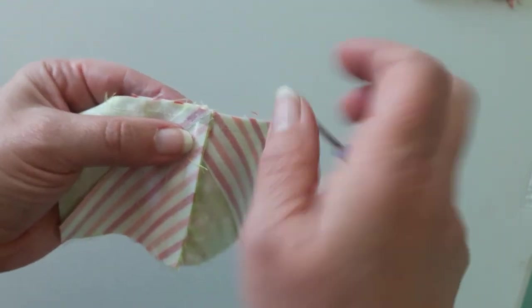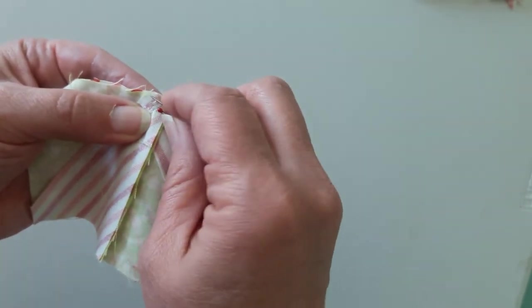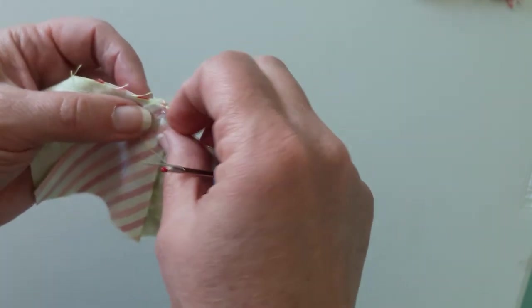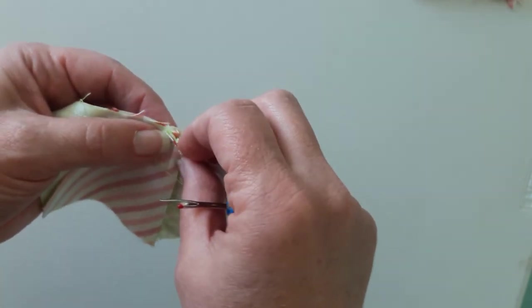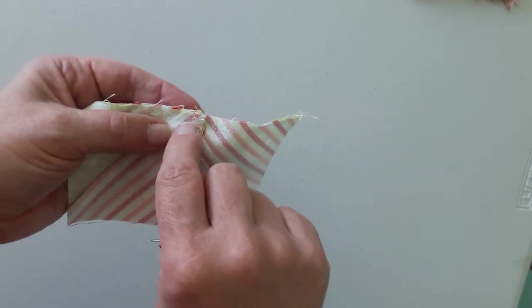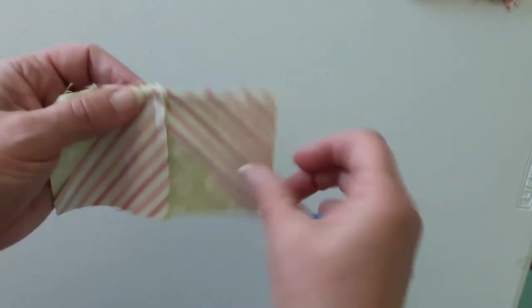We're going to turn it over and do the same thing on the other side. Just take it out a little bit, like one or two stitches. You don't want to go past this seam, but we just want to open it up a little bit.